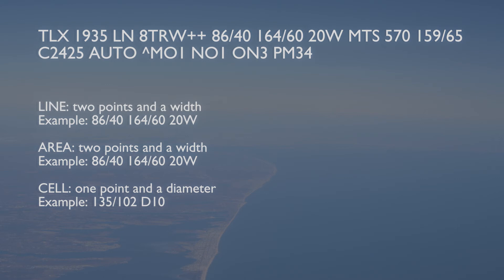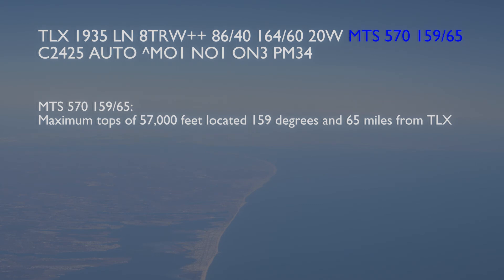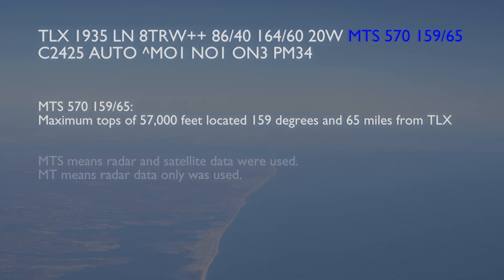Following the width or diameter, the maximum tops are given by the letters MT and the maximum tops in height. The example shows maximum tops at 57,000 feet, located 159 degrees at 65 miles from the Norman radar site. MTS in place of MT indicates satellite data was used together with radar data in making the maximum top determination. MT alone indicates radar data was the sole source of the maximum tops data.